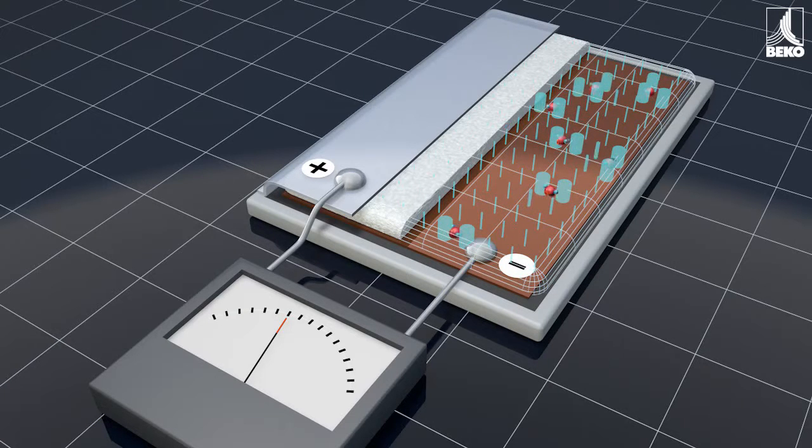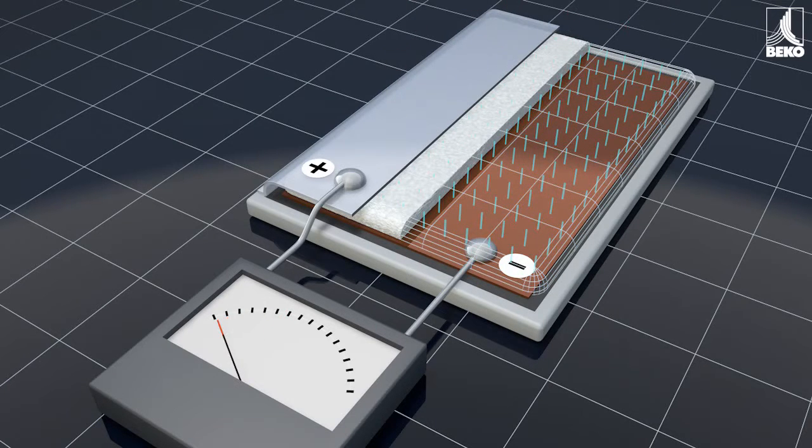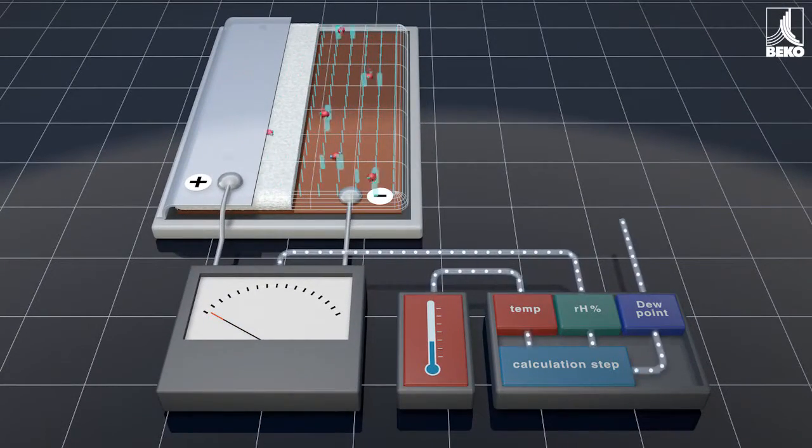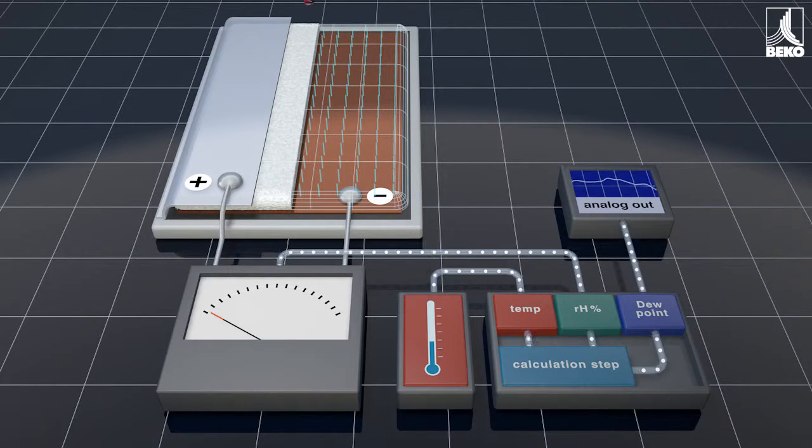The resulting capacitance is measured by means of alternating reduction in voltage, and a moisture value is calculated. Depending on the process temperature, the actual dew point is derived from this moisture value.